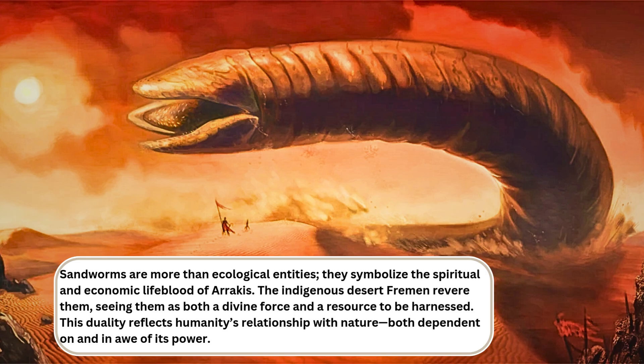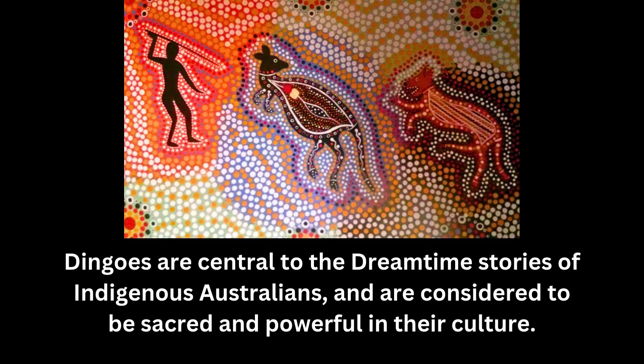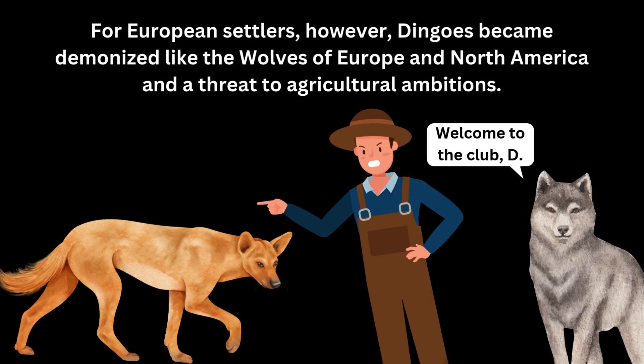Symbolic Roles. Sandworms are more than ecological entities — they symbolize the spiritual and economic lifeblood of Arrakis. The indigenous desert Fremen revere them, seeing them as both a divine force and a resource to be harnessed. This duality reflects humanity's relationship with nature, both dependent on and in awe of its power. Dingoes hold a complex place in Australian culture. For Aboriginal Australians, they are spiritual totems and companions, intertwined with traditional stories and practices. For European settlers, however, dingoes became demonized like the wolves of Europe or North America, and a threat to agricultural ambitions. This dual perception underscores broader tensions between conservation and exploitation.